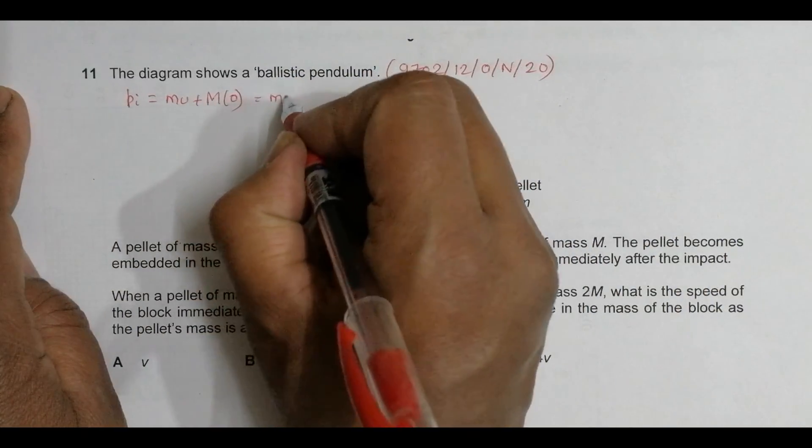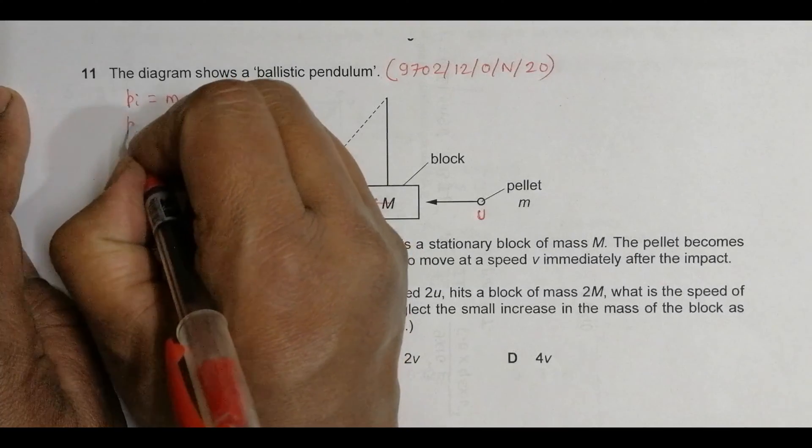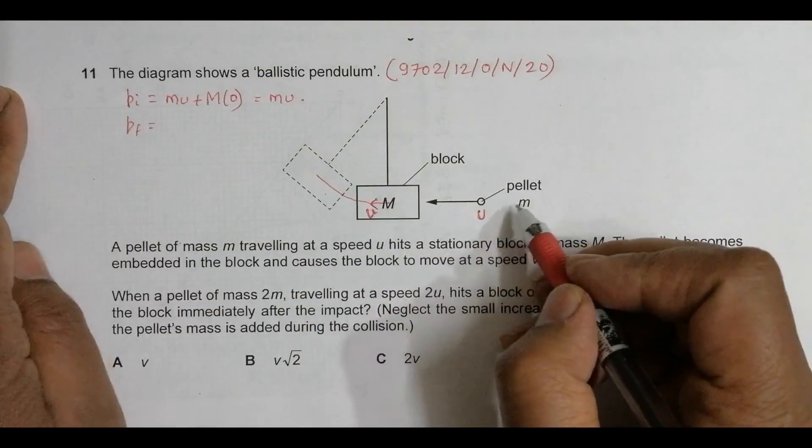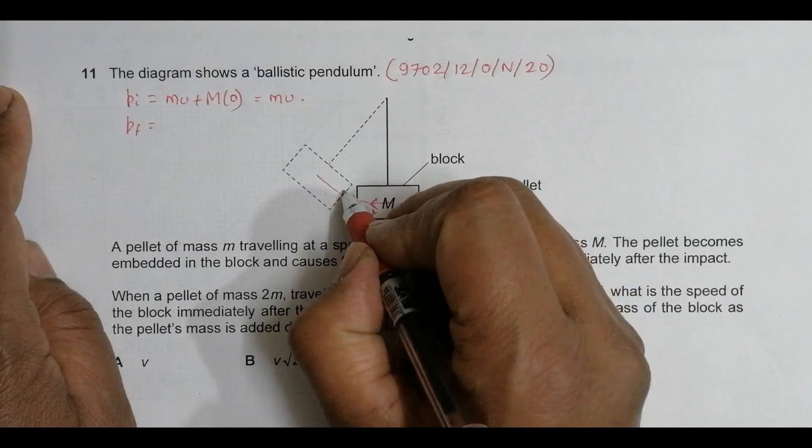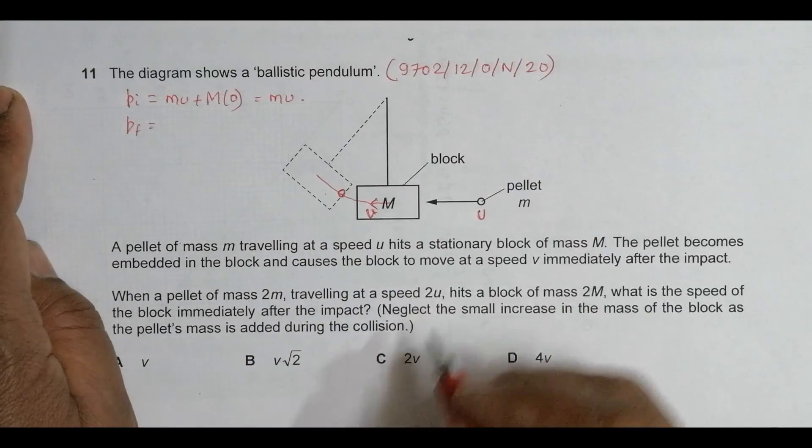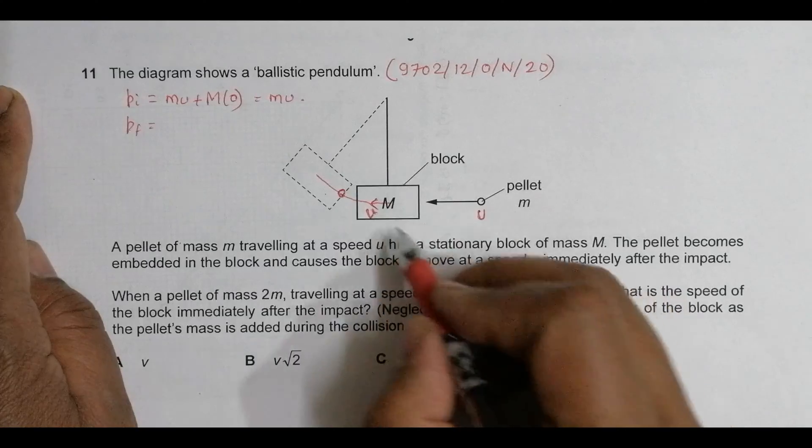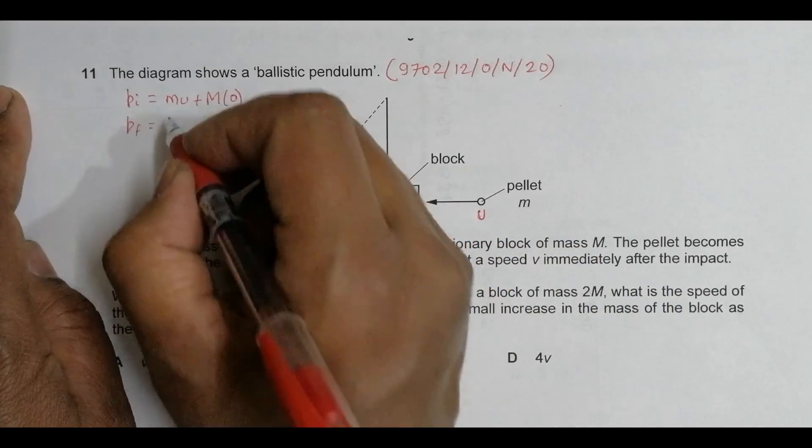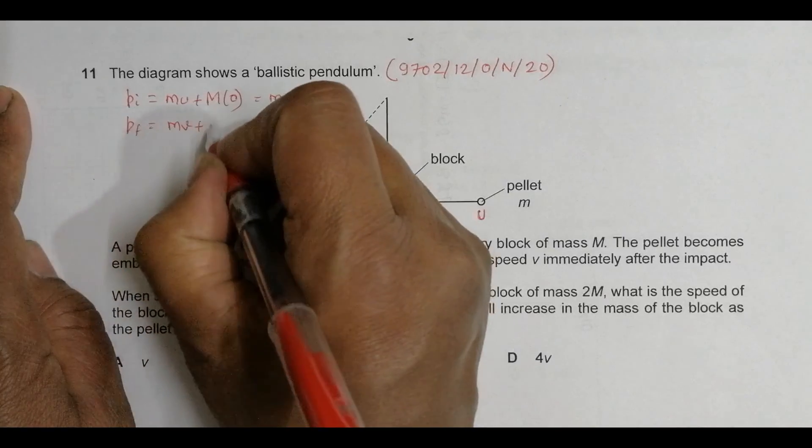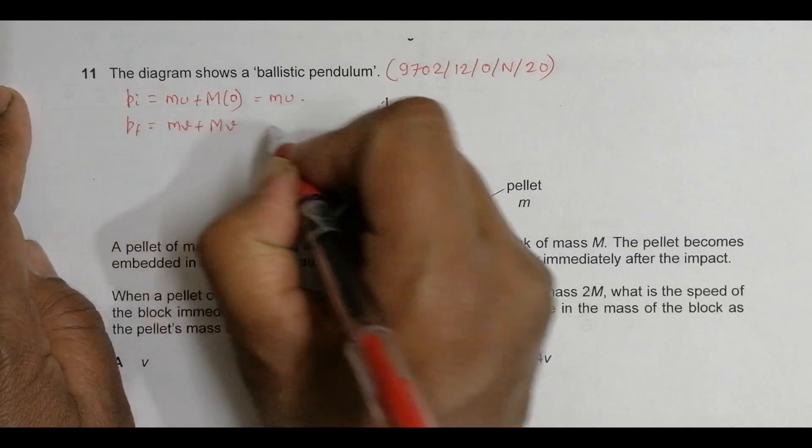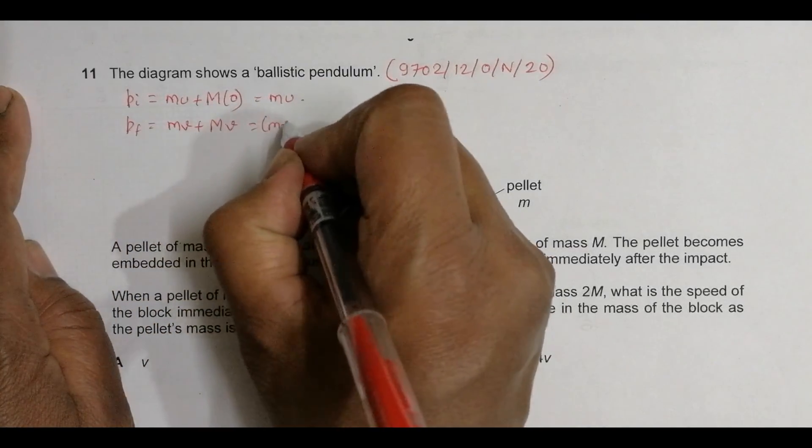P_final equals the momentum after the pellet gets embedded. They move together at velocity V, so we have m×V + M×V, which equals (m+M)V.